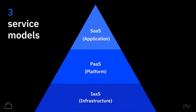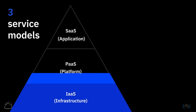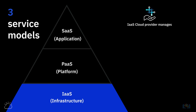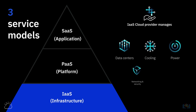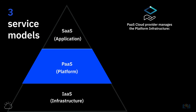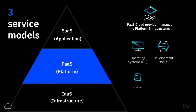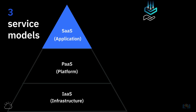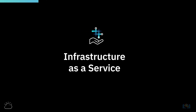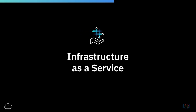In terms of cloud computing and its three service models: with IaaS, the cloud provider manages the physical resources — data centers, cooling, power, network, and security — as well as computing resources including servers and storage. With PaaS, the provider also manages the platform infrastructure, which includes operating systems, development tools, databases, and business analytics. In the SaaS model, in addition to the infrastructure and platform resources, the provider also hosts and manages the applications and data. In the next video, we'll take a closer look at Infrastructure as a Service, its features, benefits, and some use cases.